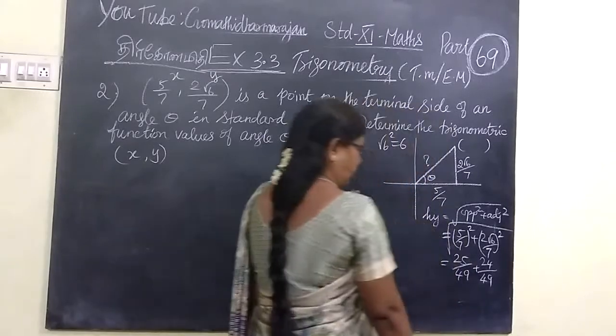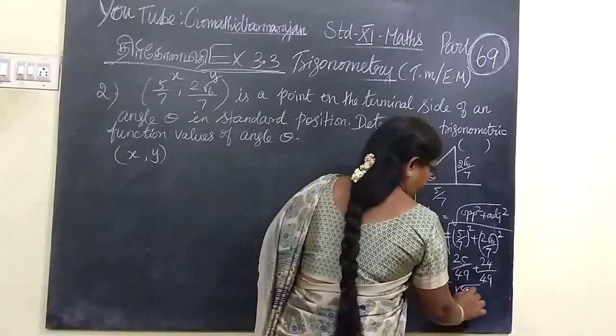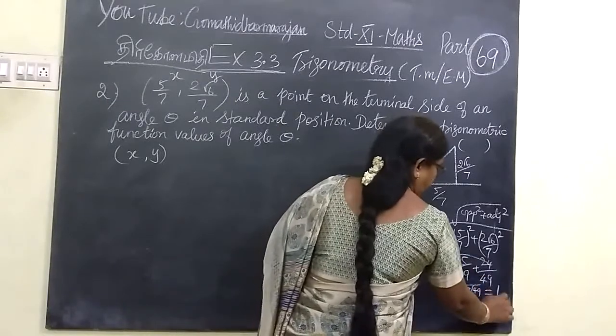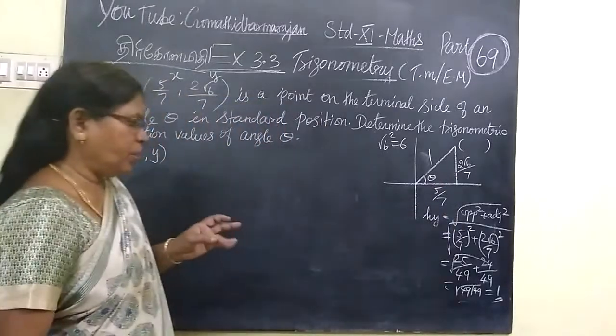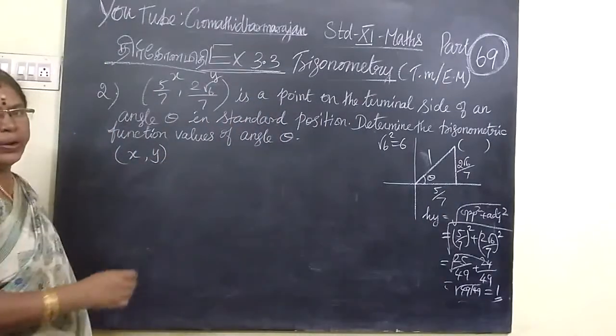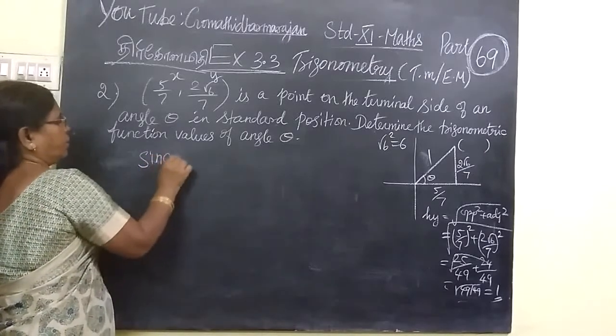So, that 4 into 6 is 24. So, 24 by 49. So, if we add you are getting 49. So, you are getting 49 by 49. So, if you take the square root, it is nothing but 1. Now, we want to find other trigonometric values.